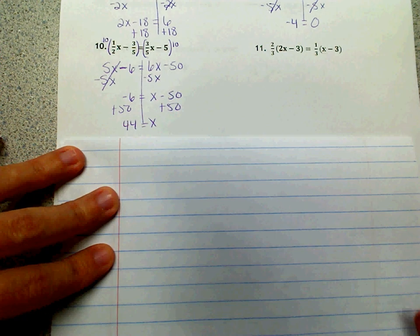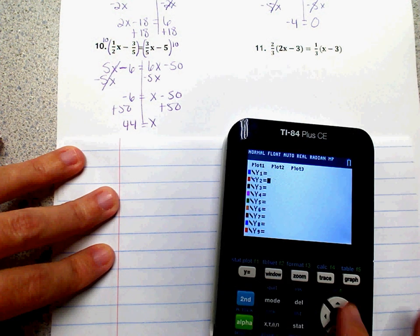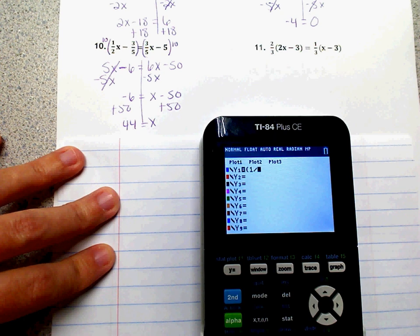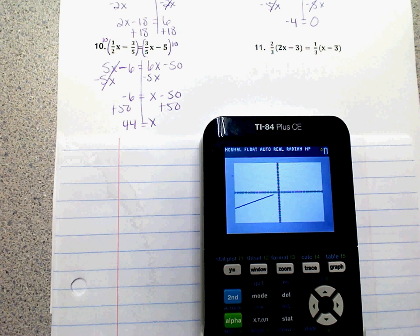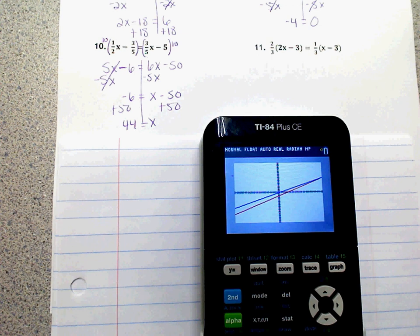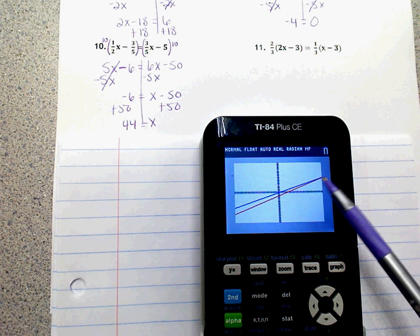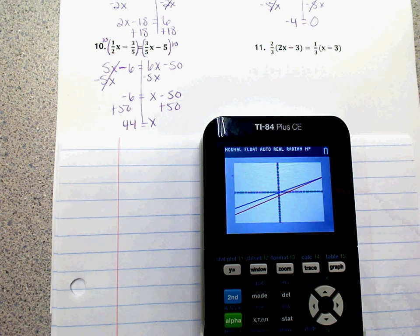Again, we can plug that in. So we can say 1/2 x minus 3/5. And on the other side, we can say 3/5 x minus 5. And x is a really large number, so we may not see them cross. We know, we can tell that they do cross somewhere around in this area, so let's go ahead and try it. It may not work. We may have to zoom out again.